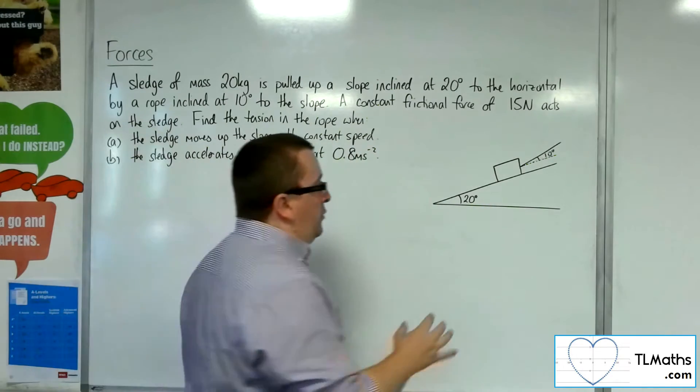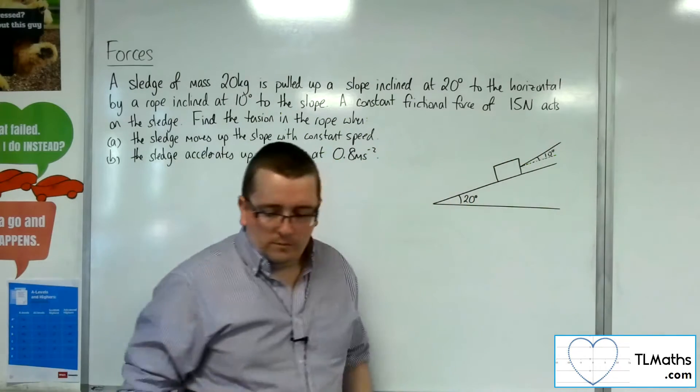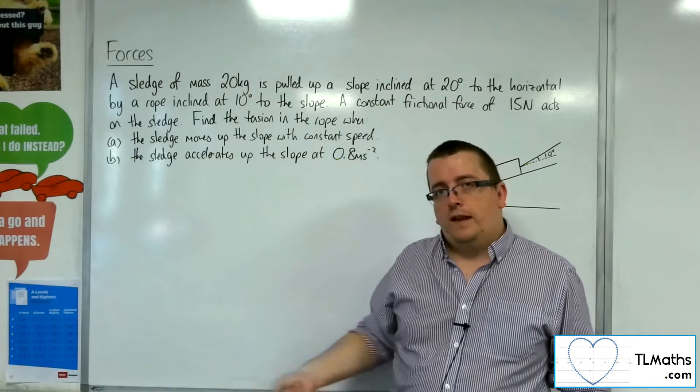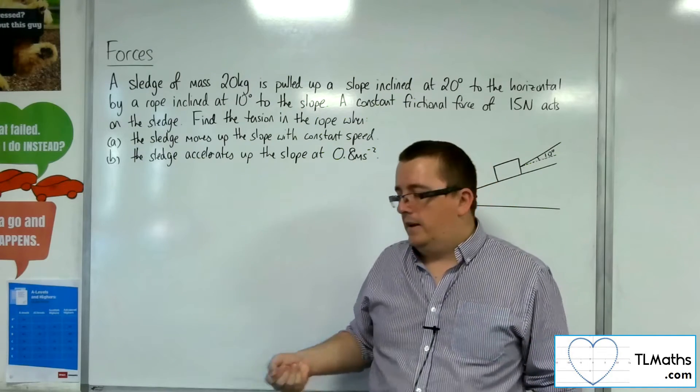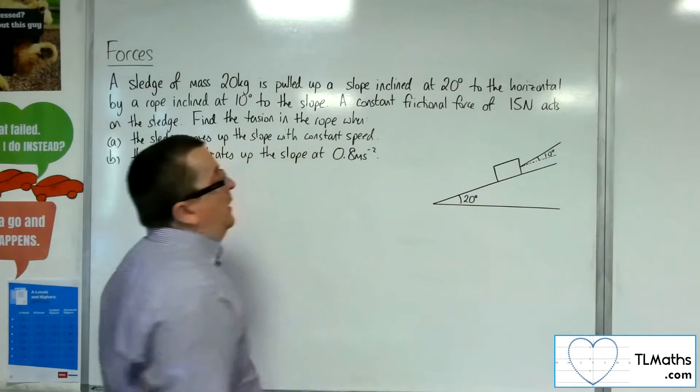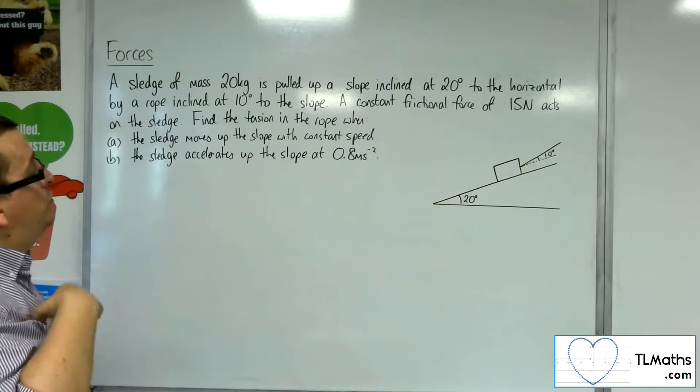The slope is at 20 degrees, but the object, the sledge, is being... So if you're pulling a sledge up, you're not going to be pulling it parallel to the slope necessarily. So you're going to be pulling it up at a slight angle inclined at 10 degrees to the slope.